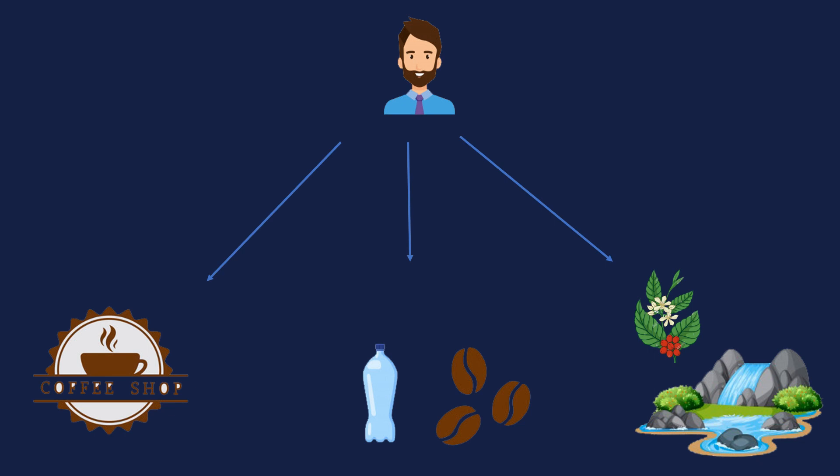The third way is going to the coffee shop — he is not responsible for getting the beans, mixing water with beans, or anything. He just orders the coffee he needs from the coffee shop.